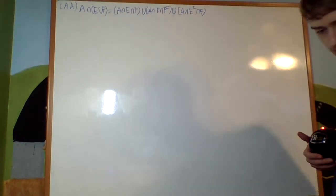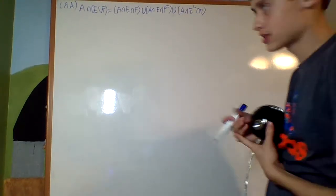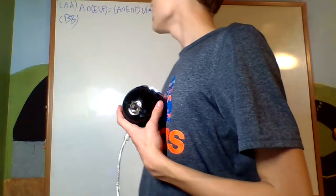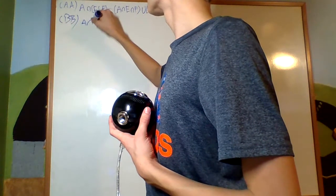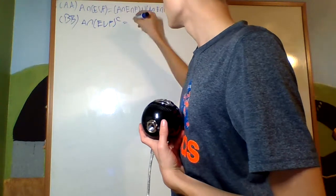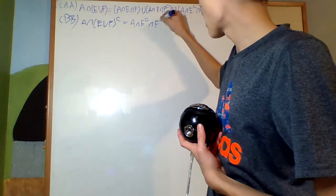Now our next fact, fact BB, is that A intersect (E union F) complement is going to be A intersect E complement intersect F complement.